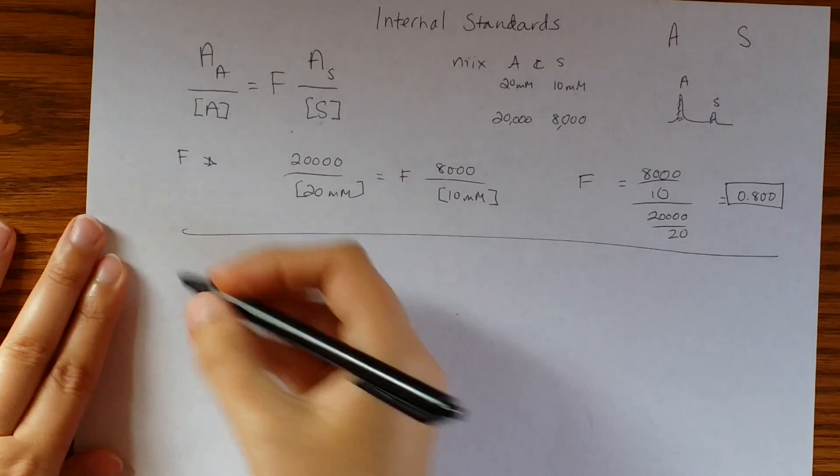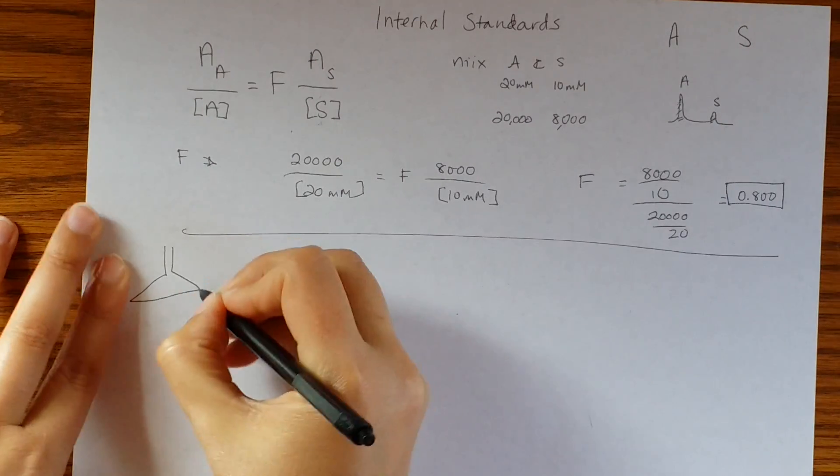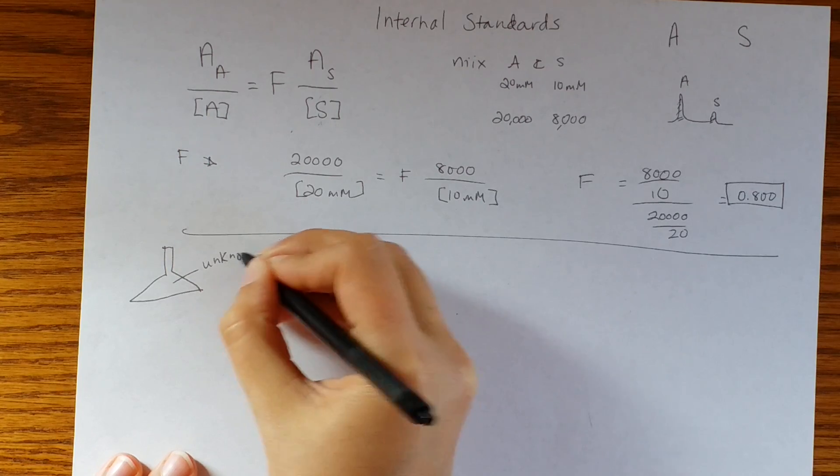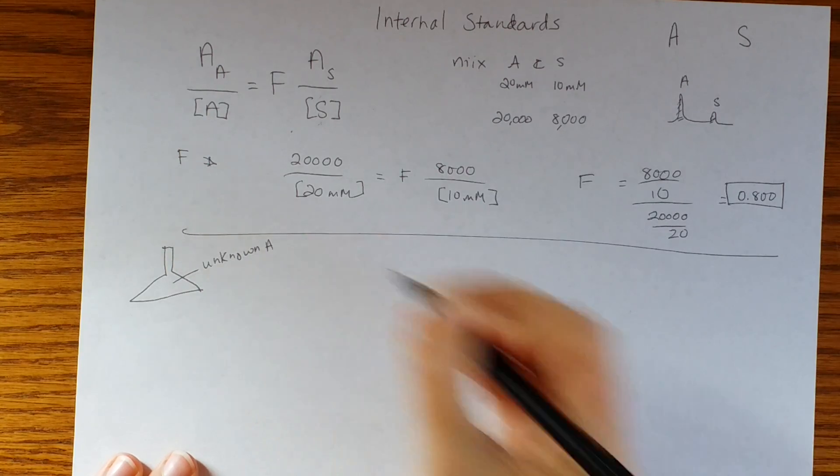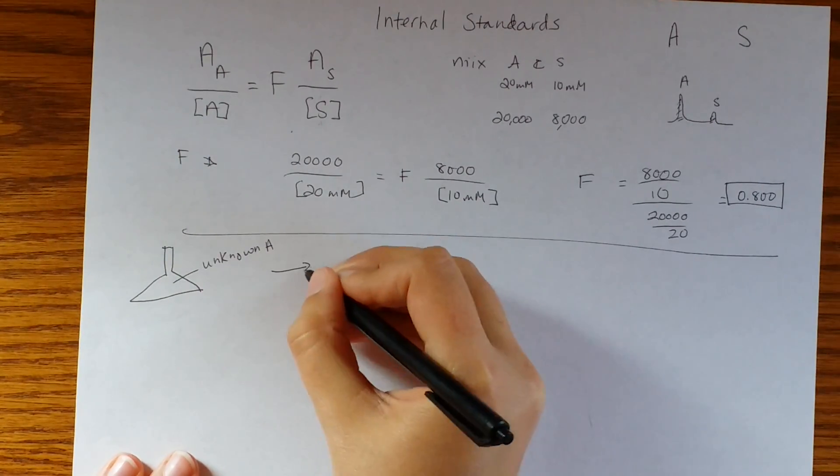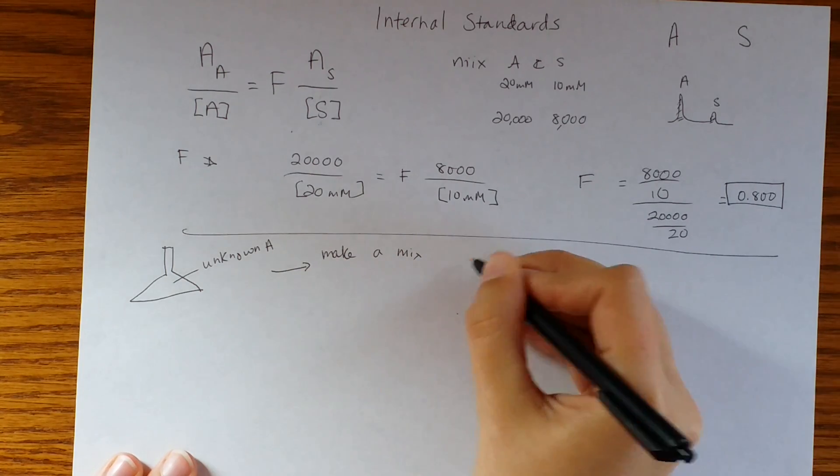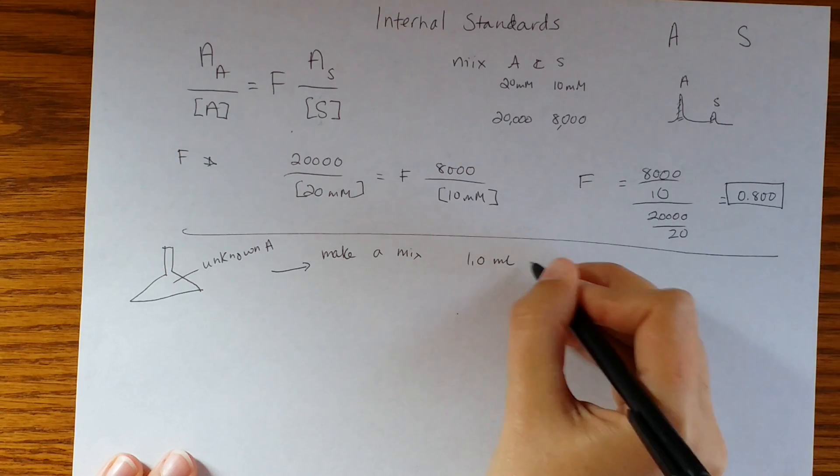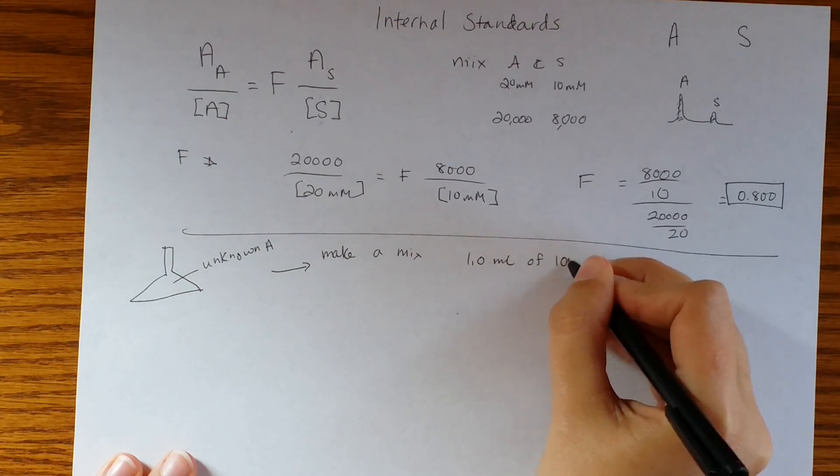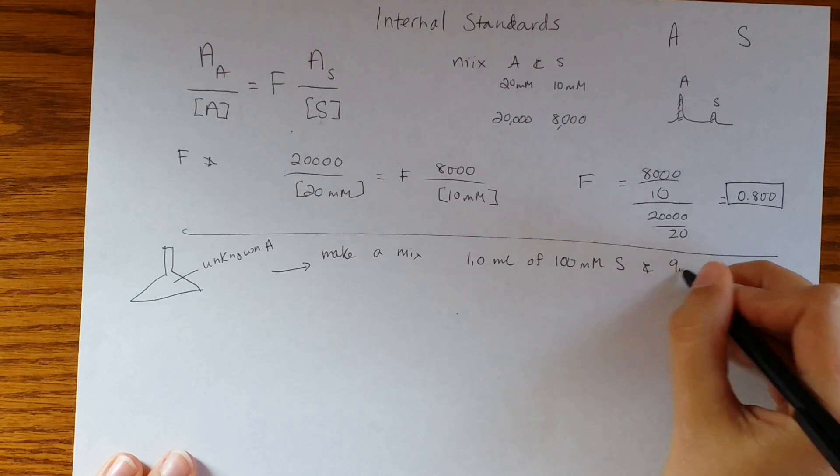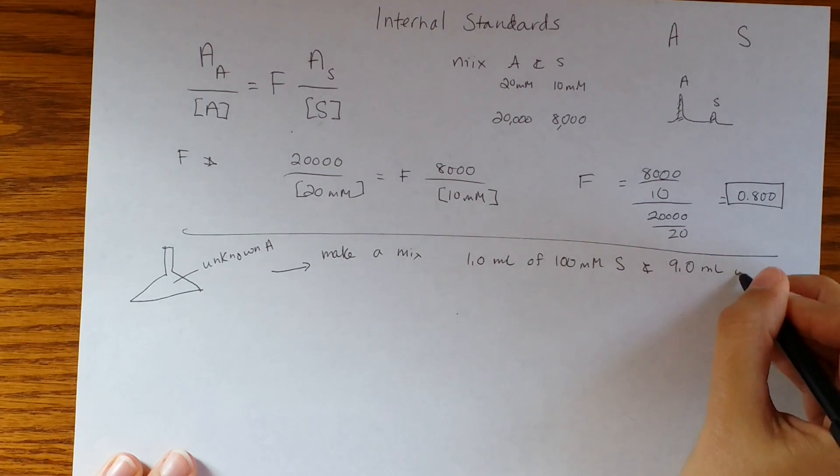Let's just suppose that we take some unknown now, and this is like a really cute Erlenmeyer flask, right? Okay, so we have unknown A and we make a mix. Let's just say that we mix one mil of 100 millimolar standard S and nine mils of unknown analyte.